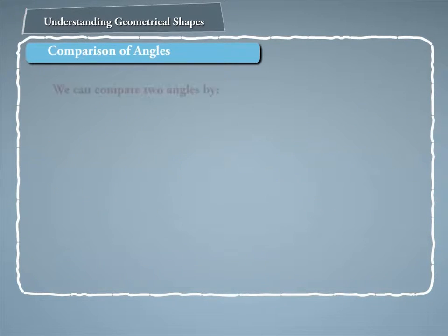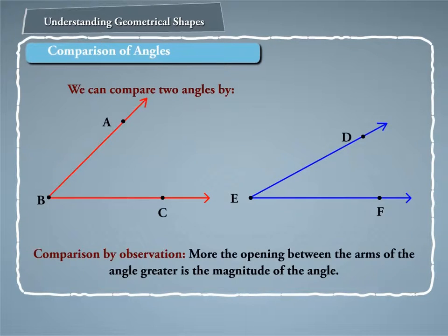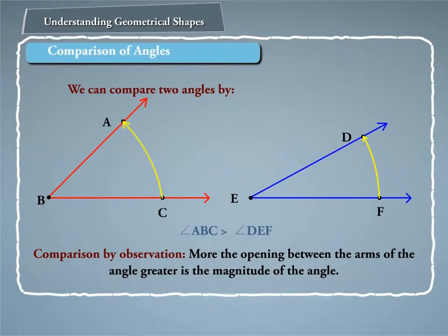We can compare two angles as follows. Comparison by observation: the more the opening between the arms of the angle, the greater is the magnitude of the angle.